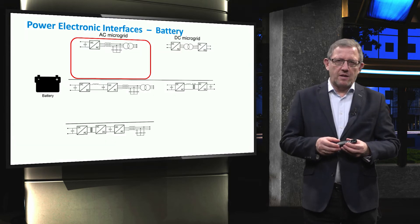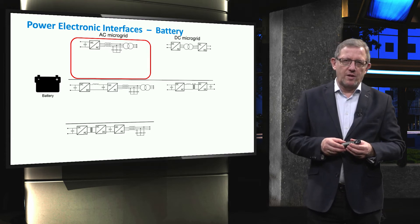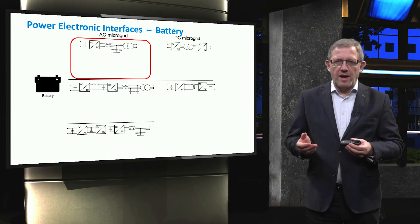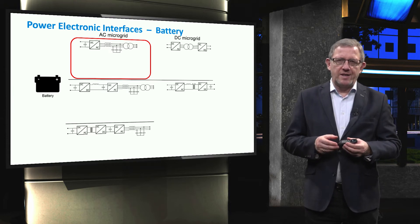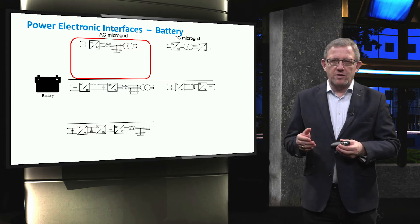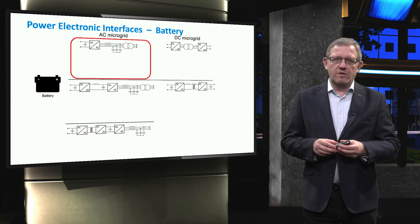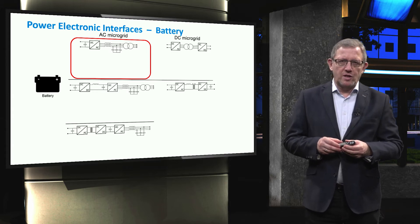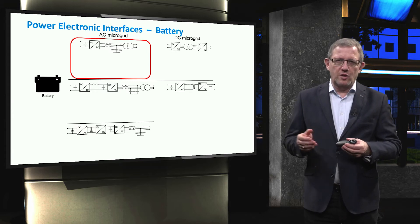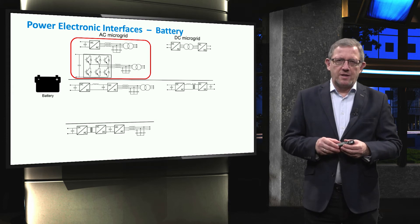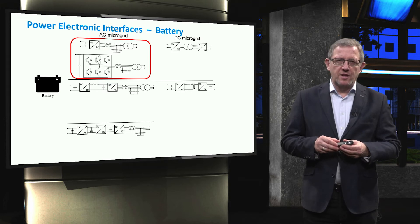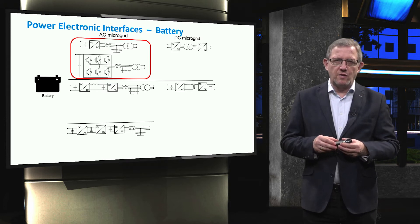Batteries are undoubtedly one of the most important storage technologies for microgrids. To connect a battery, which is inherently DC, to an AC microgrid in the simplest form, a DC to AC converter can be used. A transformer can be used to step up the voltage, for instance from the low to the medium voltage levels. The DC to AC conversion can be achieved through a single stage three-phase six-switch inverter.